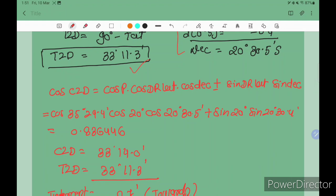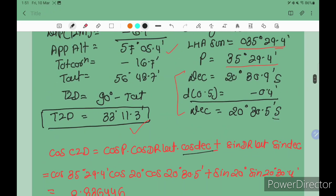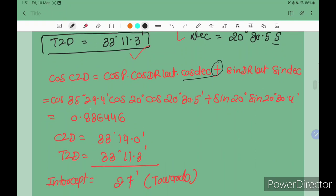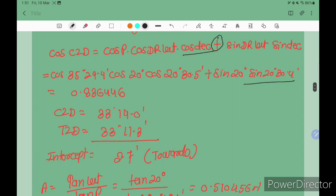Now we put the values in the intercept method formula: cos CZD equals cos P times cos DR latitude times cos declination plus sign latitude times sign declination. Since we have both the same name, south DR latitude and declination south, we put plus sign. The values are: cos 35 degrees 29.4 minutes, cos 20 degrees, cos 20 degrees 30.5 minutes, plus sign 20 degrees times sign 20 degrees 30.4 minutes.